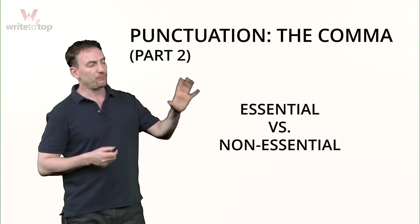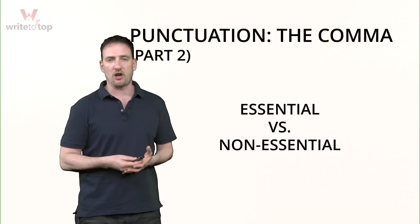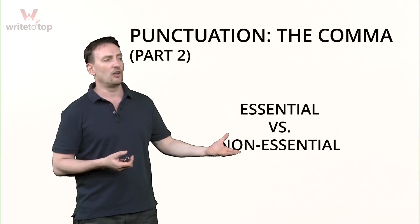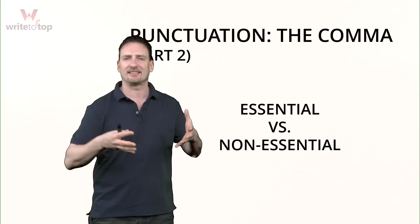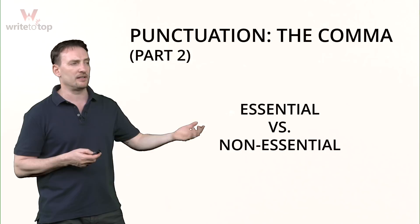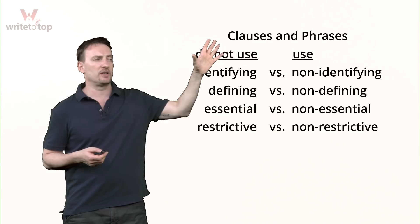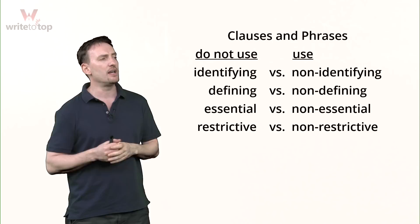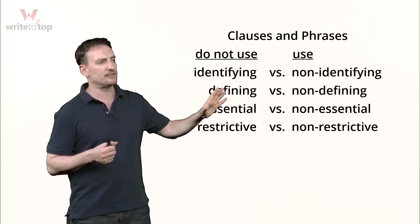Today, I want to look at essential versus non-essential use of the comma. Essential means it's necessary — you have to use it. Non-essential means the thing you're putting commas around is not very necessary to the sentence, which means you can take it out. Essential: use a comma. Non-essential: don't use a comma. We're going to be looking at clauses and phrases and whether you need a comma before or after or both.